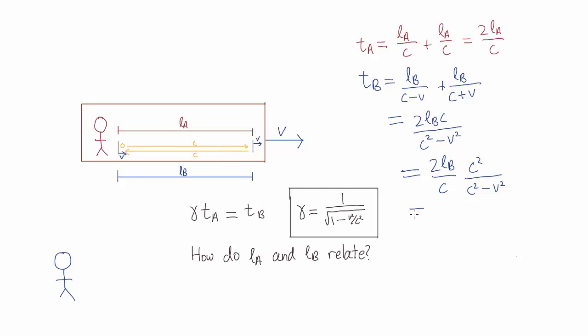If we take this suggestive form and look at the term on the right and divide the top and the bottom by c squared, we get this.